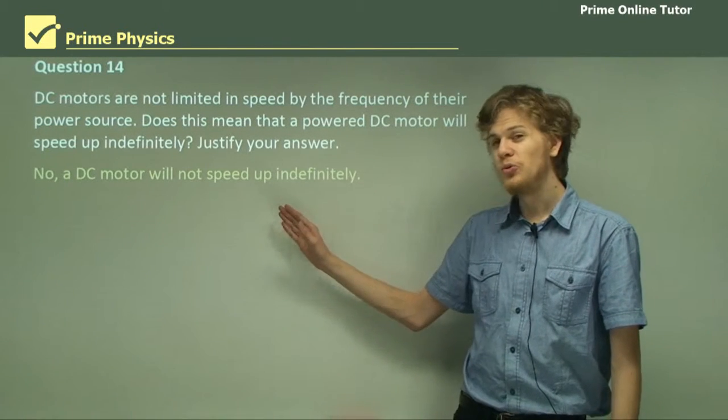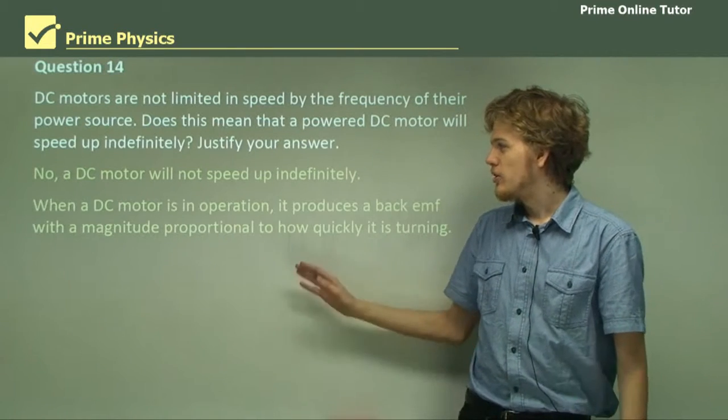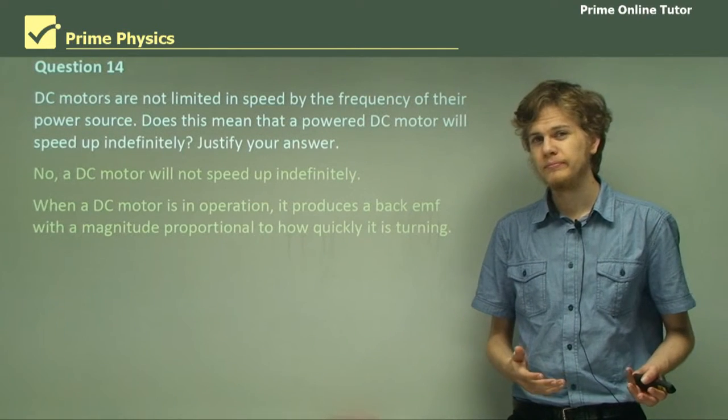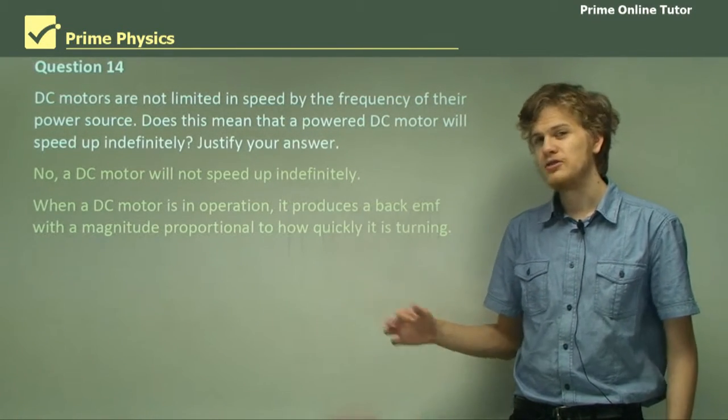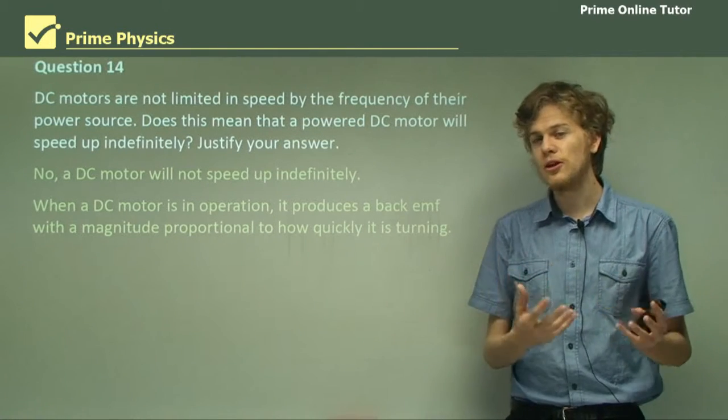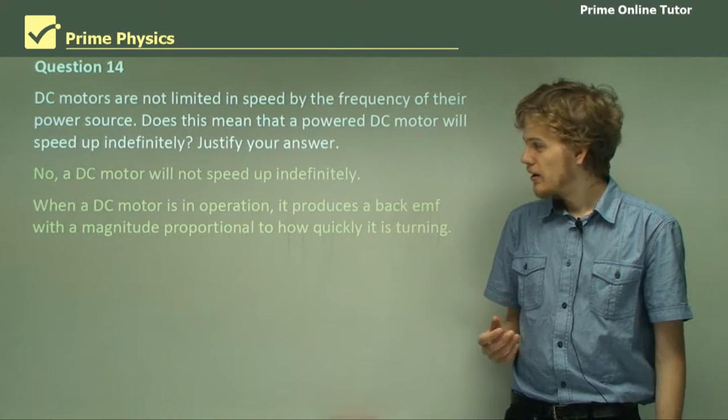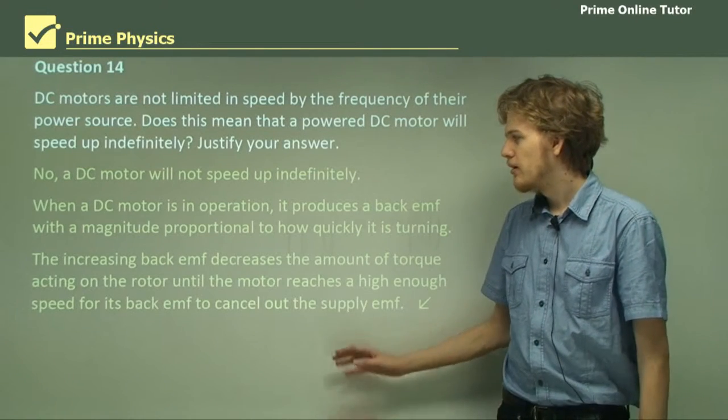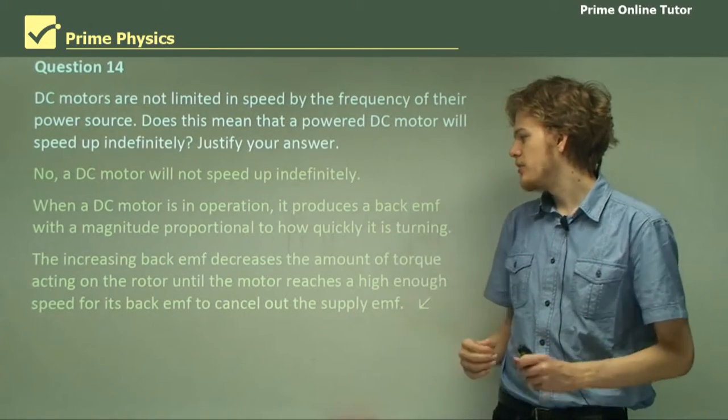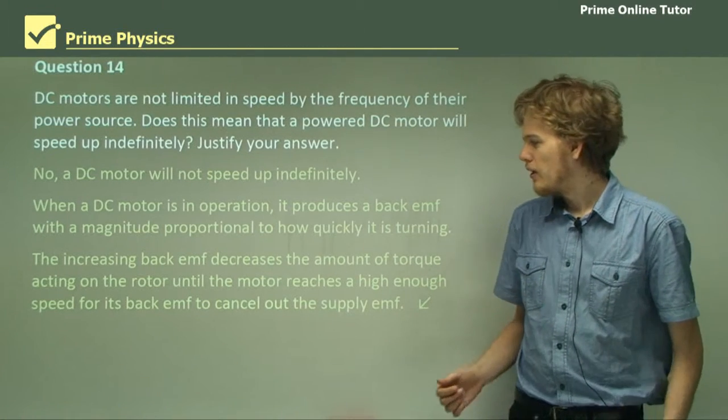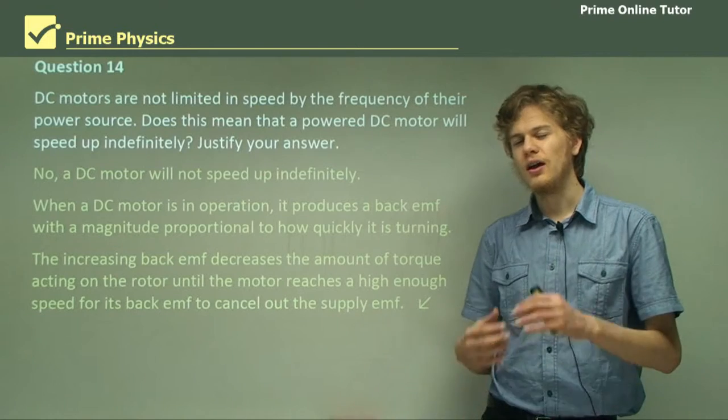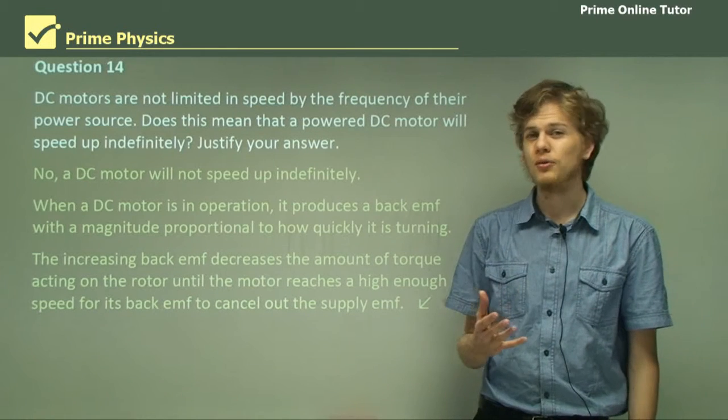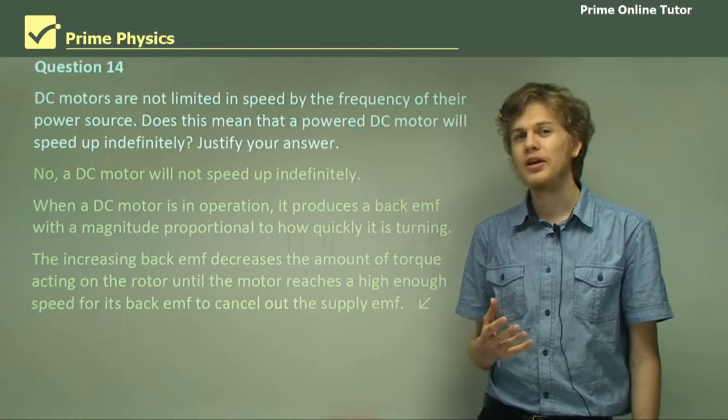So a DC motor will not speed up indefinitely. When a DC motor is in operation, it will produce a back EMF with magnitude proportional to how quickly it's turning. Because the back EMF has a magnitude proportional to the rate of change of flux through the coil. That means that the faster the motor is turning, the more back EMF there is. So the increasing back EMF decreases the amount of torque acting on the coil. At one point when the motor reaches a high enough speed, the back EMF will be equal to the supply voltage. That means that there will be no current flowing through the coil, and the motor will be unable to get any faster.